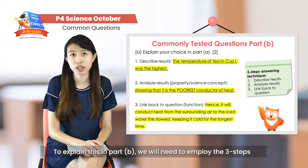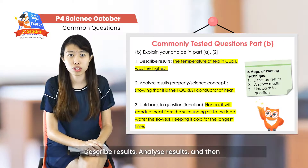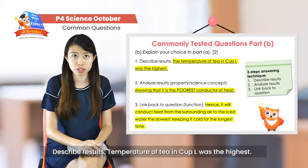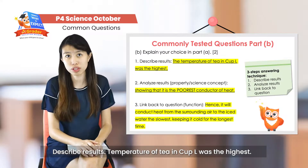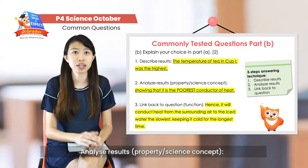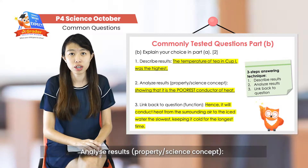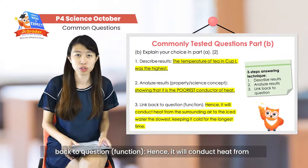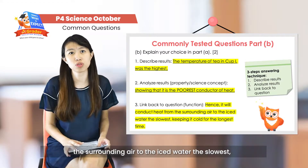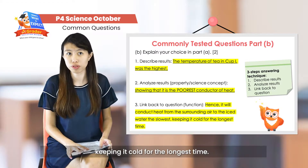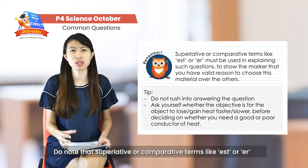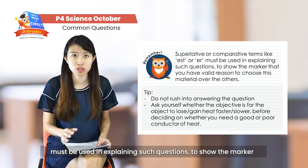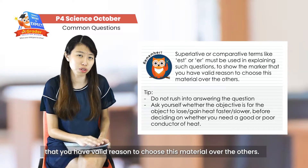To explain in question B, we need to employ the three-step answering technique: describing the results, analysing the results, and linking back to the question. Firstly, to describe the results, they must state that the temperature of the tea in cup L shown was the highest. When they analyse it using the science concept, they have to say that it is a poor conductor of heat. Then they link back to the question: hence, it will conduct heat from the surrounding air to the ice water the slowest, keeping it cold for the longest period of time. Do note that superlative or comparative terms — like '-est' or '-er' — must be used in explaining such questions to show the marker that there is a valid reason to choose this material over the rest.